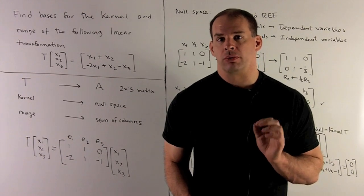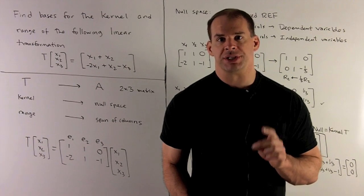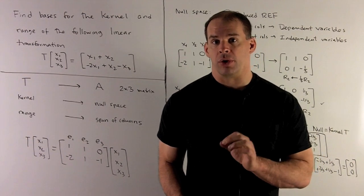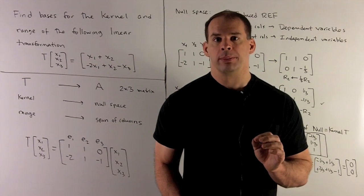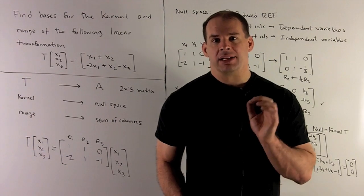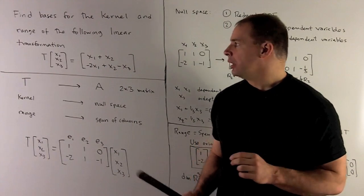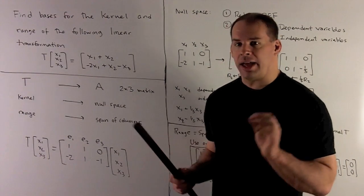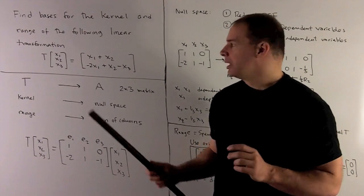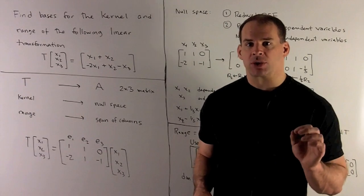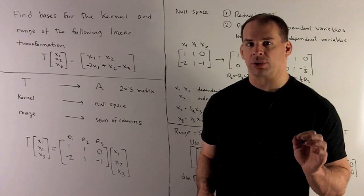Find bases for the kernel and range of the following linear transformation, T. T is going to go from R³ to R². T is given by T of X₁, X₂, X₃ is equal to, first entry X₁ plus X₂, second entry minus 2X₁ plus X₂ minus X₃.